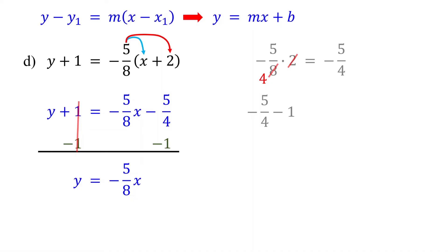First, write 1 as a fraction, which is 1 over 1. Then, multiply it by 4 over 4 to get a common denominator. Now, subtract the numerators. This gives us negative 9 fourths.